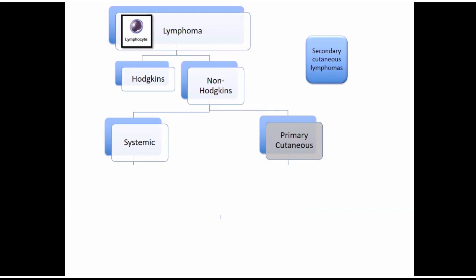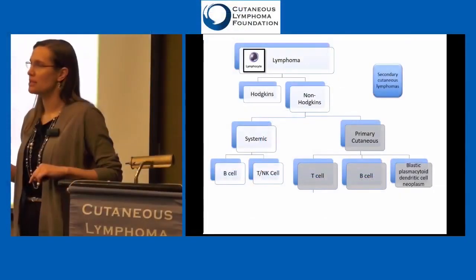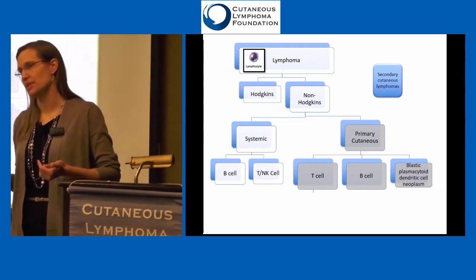The primary cutaneous lymphomas are what we'll talk about today. When we first see a patient, we're always thinking which category do we fall into. Within both systemic lymphomas and skin lymphomas, we usually break those down into T cells or B cells — those are the major groups. Interestingly, if you look at systemic lymphoma, most of the time we're talking about B cell lymphomas. The reverse is true in the skin: T cell lymphomas are far more common, so we'll talk more about T cell lymphomas today.